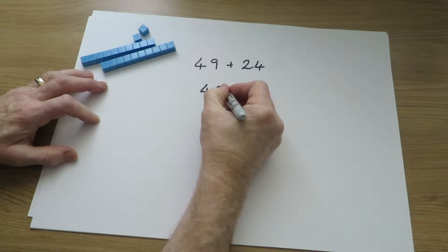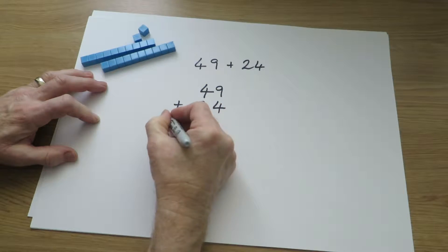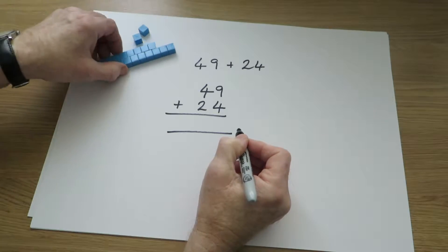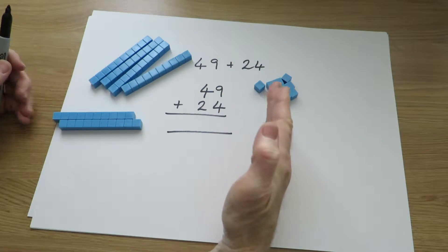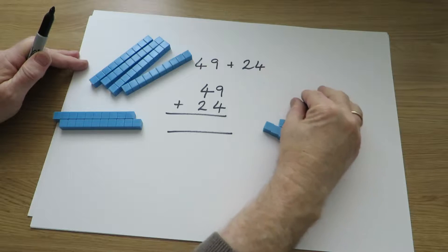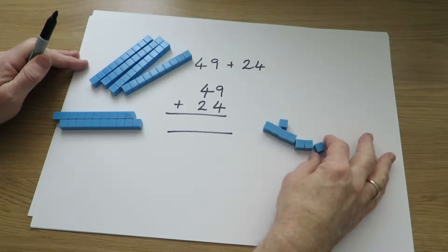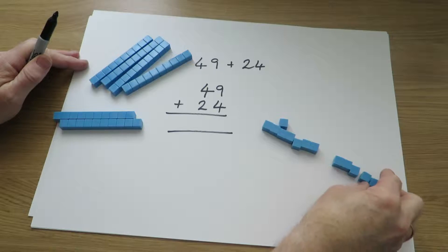This equipment is really good with questions such as 49 plus 24. In columns 49 plus 24 would look like that. Now adding the units first, 9 units and 4 units, will give us 13 units all together.